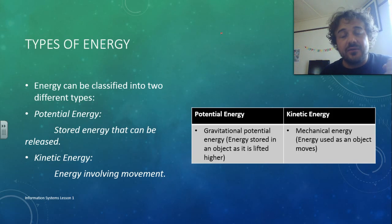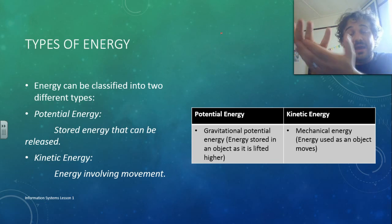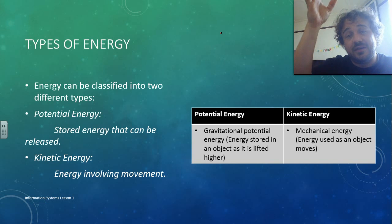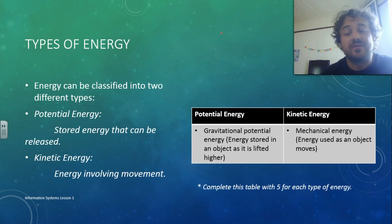Alright, so, quick example. Gravitational potential energy: when we lift something up higher, it gains potential energy, which means it's storing energy, so when it drops, when you let go, it falls. An example of kinetic energy is mechanical energy, and when something's moving, it's using mechanical energy, so that's when the particles are moving. Alright, so, you're going to complete that table, so pause it right there, and complete that table with five examples for each type, for kinetic and potential.